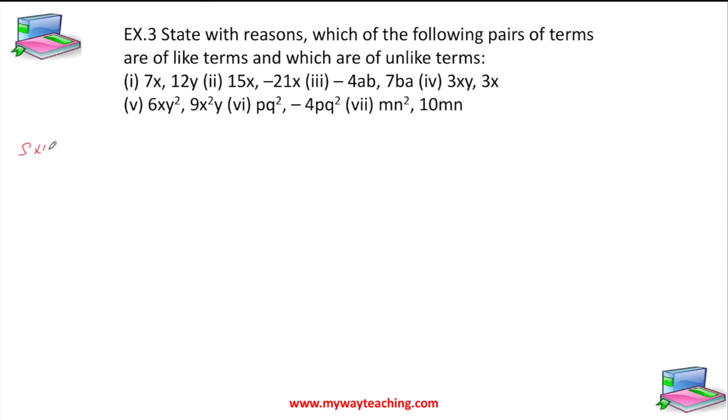We can do this in a systematic way. First we identify the pair, then list the factors, then check if the algebraic factors are the same or different. If it's different then it's unlike, otherwise it's like.